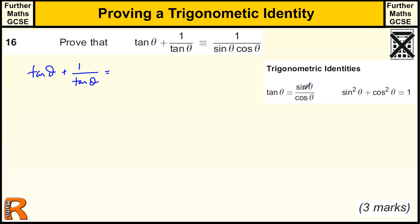Now that's equal to, well, tan θ is sin θ over cos θ. So let's rewrite that as sin θ over cos θ. And 1 over tan θ is the reciprocal of sin θ over cos θ, which is cos θ over sin θ.